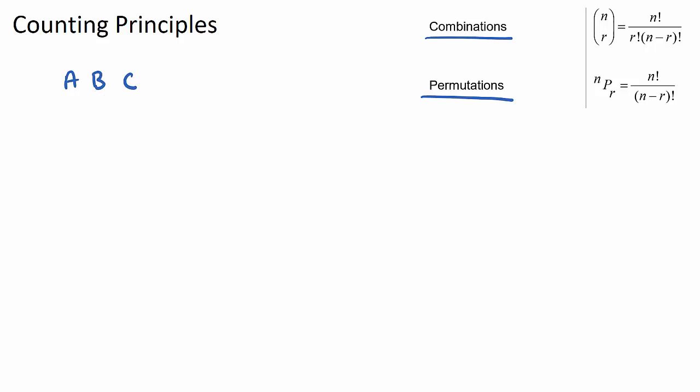Well A, B, C would be one. We could have A, C, B and then if I started with B I could have B, A, C. I could then have B, C, A and then if I start with C they'll have C, A, B and C, B, A.